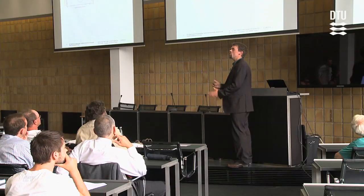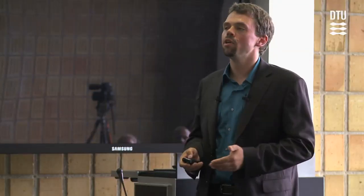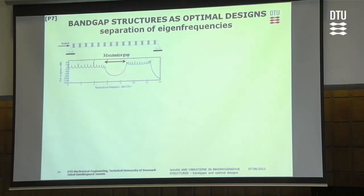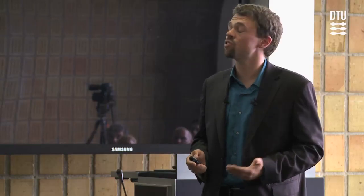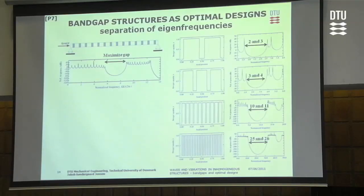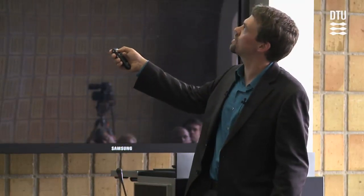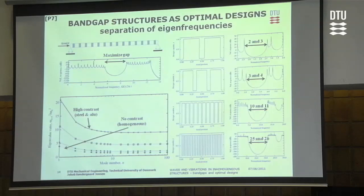Another way to look at the optimization problem is to consider the eigenfrequencies of the structure. If you have a band gap with low amplitude response, there's a large gap between the eigenfrequencies on each side. We could create structures by maximizing this gap for a 1D structure — maximizing the difference between the second and third, third and fourth frequencies — finding a one-to-one relation between the number of separated frequencies and the number of periodic segments in the optimized structure. There is an asymptotic limit to how much you can separate higher-order modes with a given material contrast.